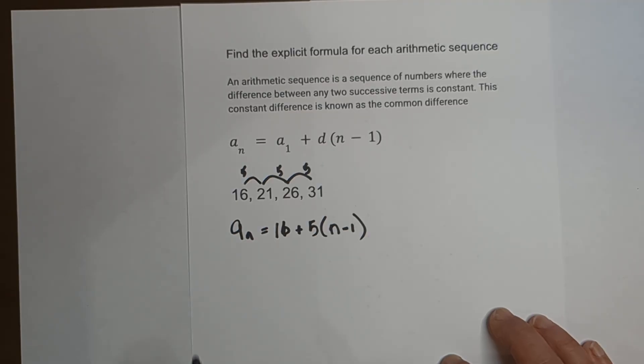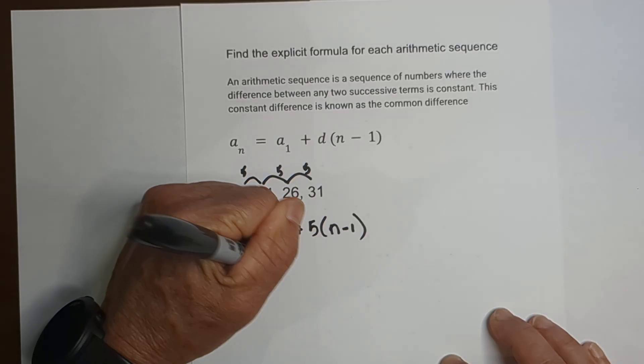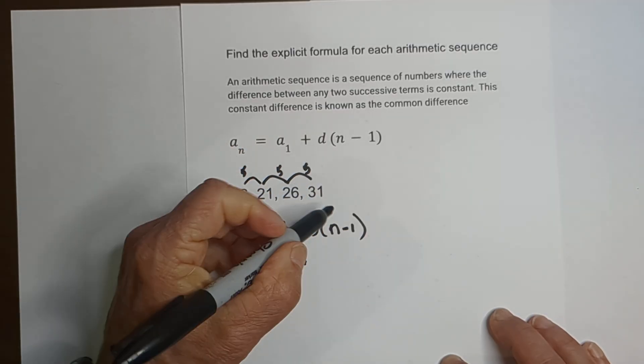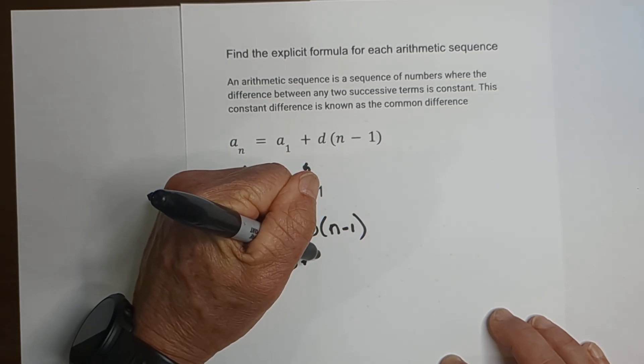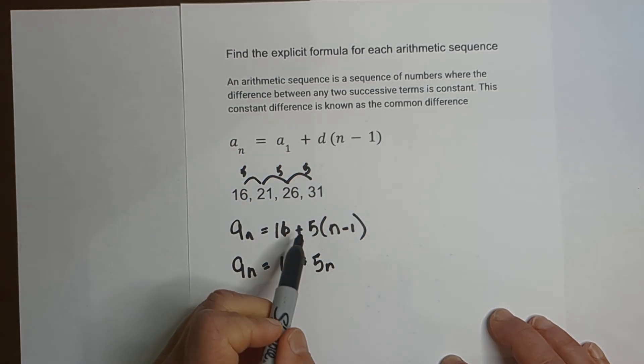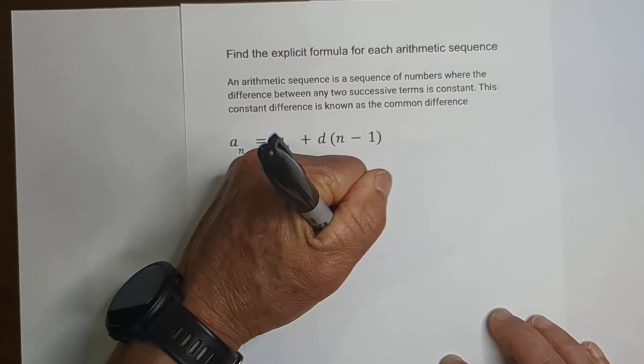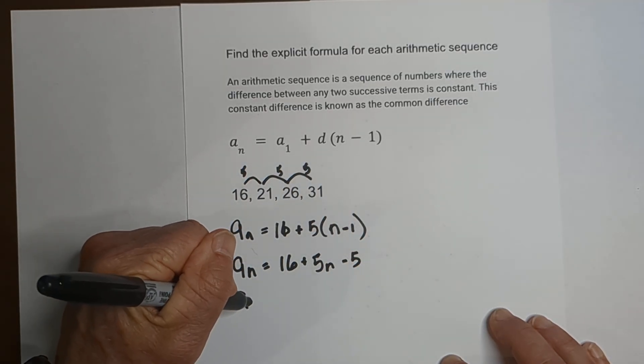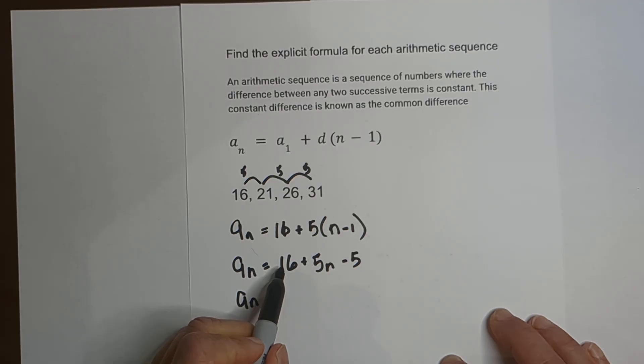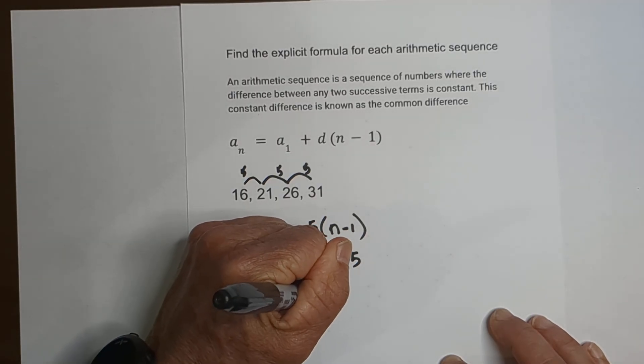Now if you'd like, you can clean this formula up. So you have a_n equals 16 plus let's distribute the 5. 5 times n is 5n, and then 5 times negative 1 - remember when the signs are different it becomes a negative number. We can now combine terms: a_n equals 16 and negative 5 is 11 plus 5n.